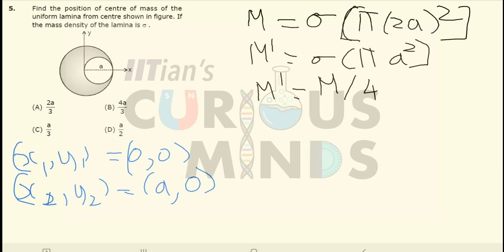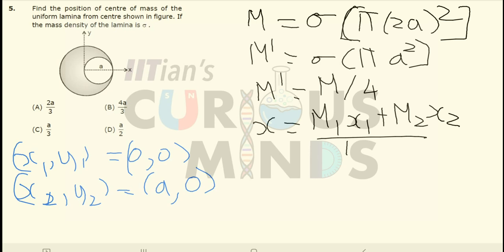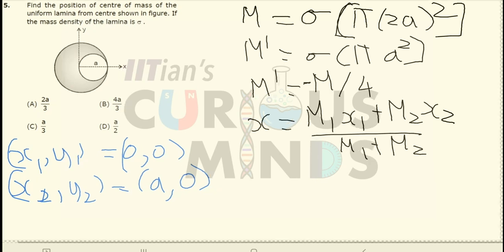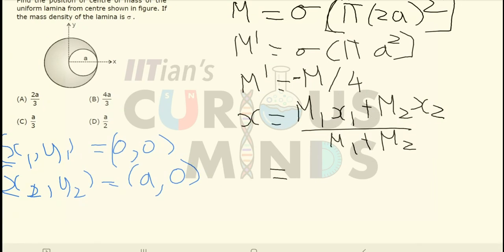So we have to find the center of mass. The x-coordinate of the center of mass is equal to (m1·x1 + m2·x2) divided by (m1 + m2). Since the mass has been removed, I will substitute it as negative. m1·x1 is anyway equal to 0, and m2 is equal to minus m/4.